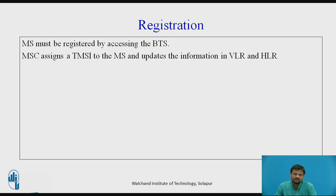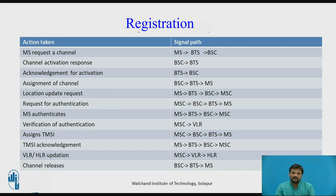The mobile subscriber registration process is described by the action taken and signal path. We have two lists: action taken and signal path. For example, when the MS requests a channel, the message flow is from the MS, which initiates a channel request and transmits it to the base station, which then forwards that request to the base station controller.